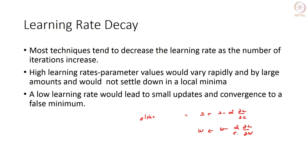What people typically do is vary alpha with every iteration or epoch. An epoch is when you have gone through your entire dataset once. If you are using stochastic gradient descent or mini-batch gradient descent, you run through your entire dataset and that constitutes one epoch.